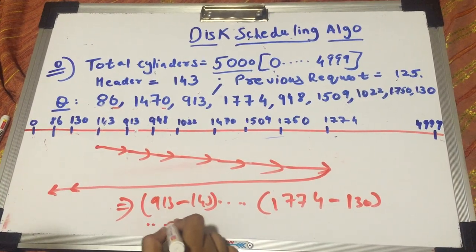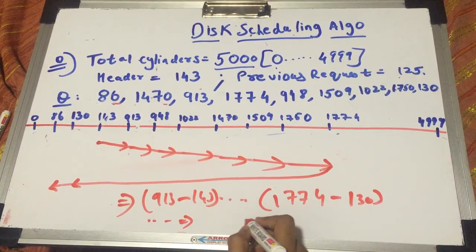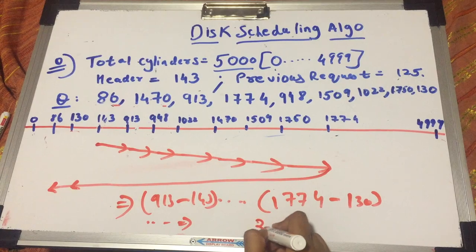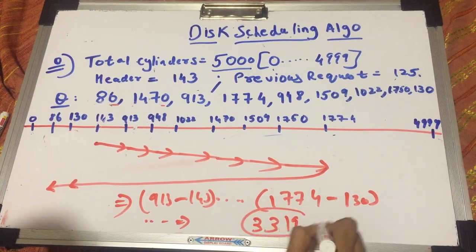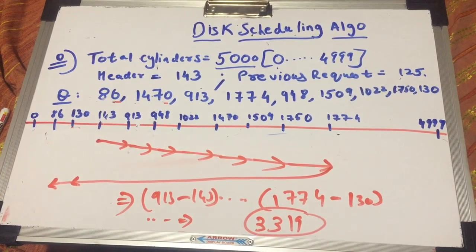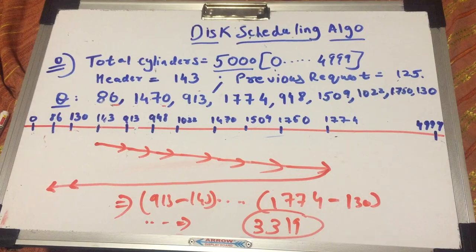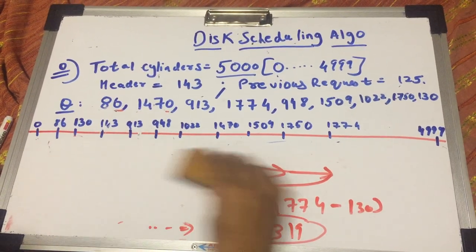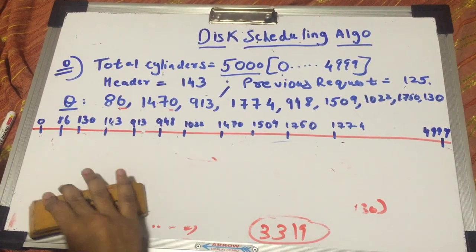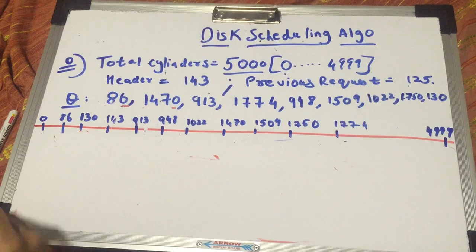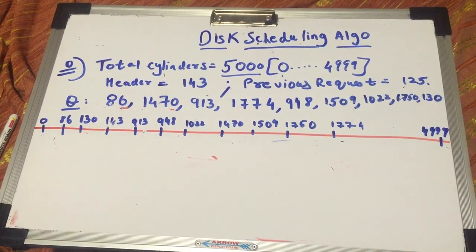So once you find the total seek time, it amounts to 3319. You can do this as a homework and you can just figure it out if you want to check your answers. It comes out to 3319.